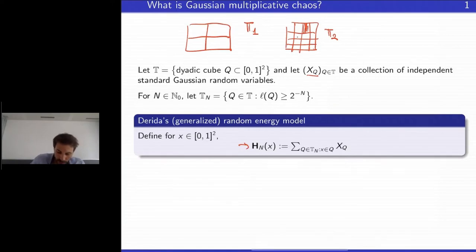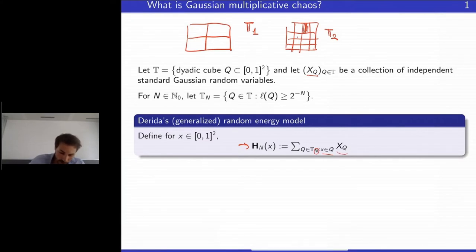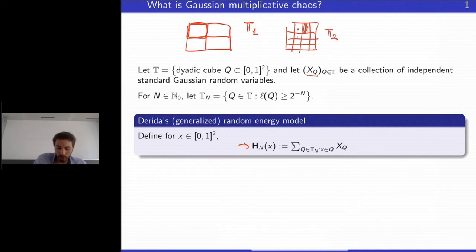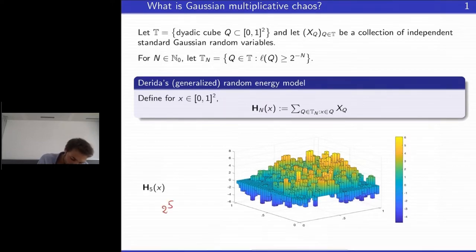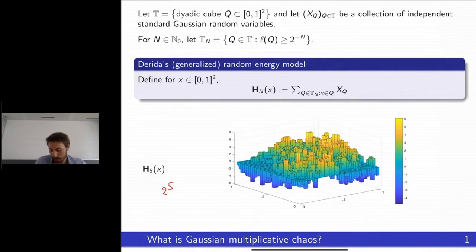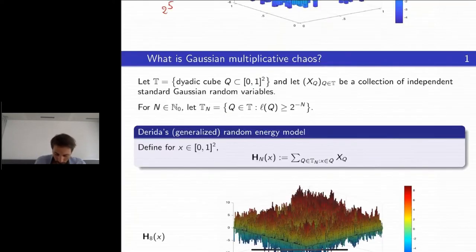We consider the random function h_n at point x, which is a sum over all random variables x_Q for all squares Q containing x, stopping at level n, giving exactly n terms. The first thing to note is that there are positive correlations: two points in different squares still share some common random variables. In fact there is a natural branching structure coming from the dyadic cubes in this model.